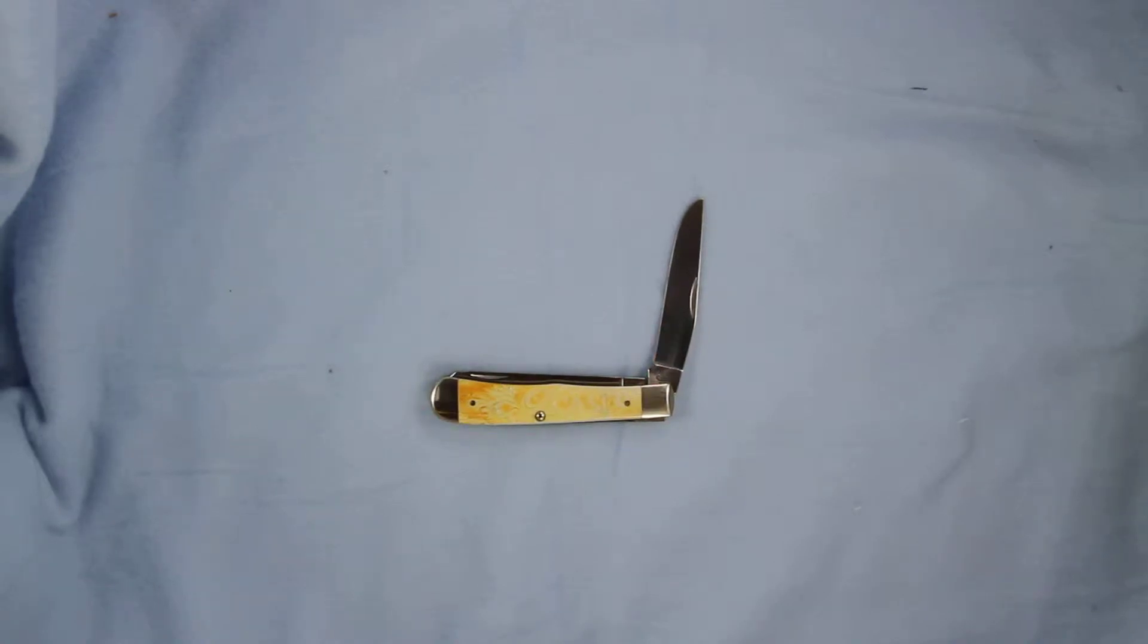This is Case Model 31755 called the Carved Burnt Oatmeal Trapper. It's a single-bladed knife. You'll see with that nice burnt kind of yellow to orange colors in there called an oatmeal carved bone.